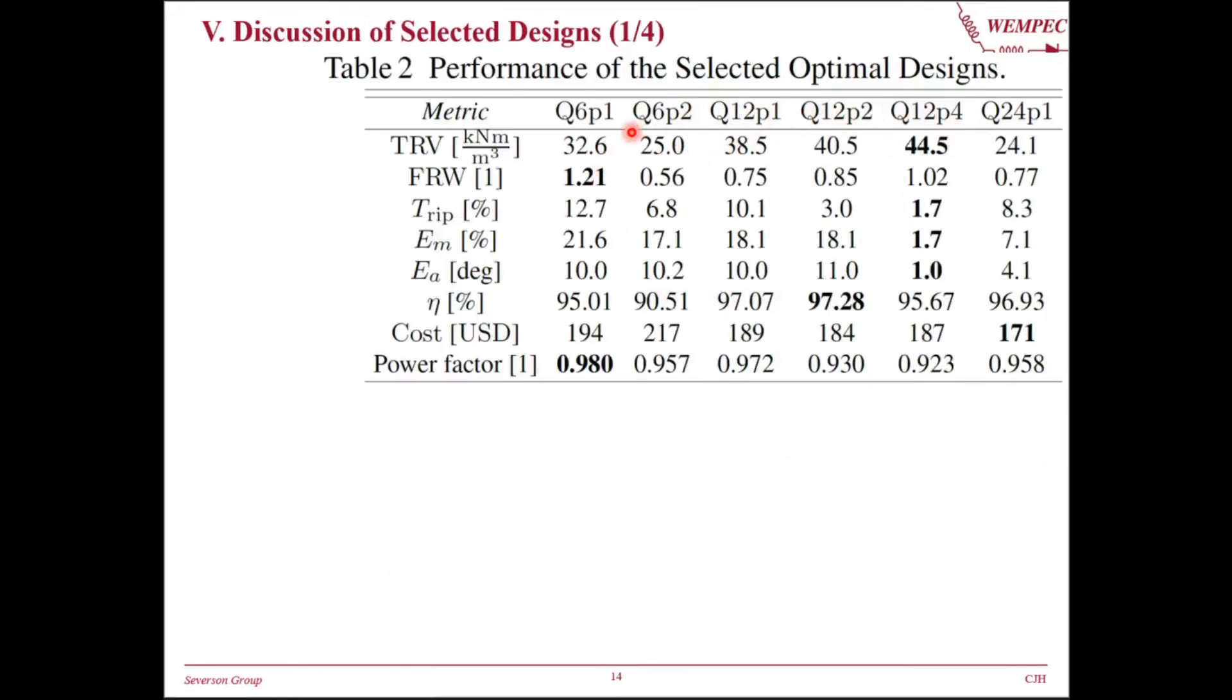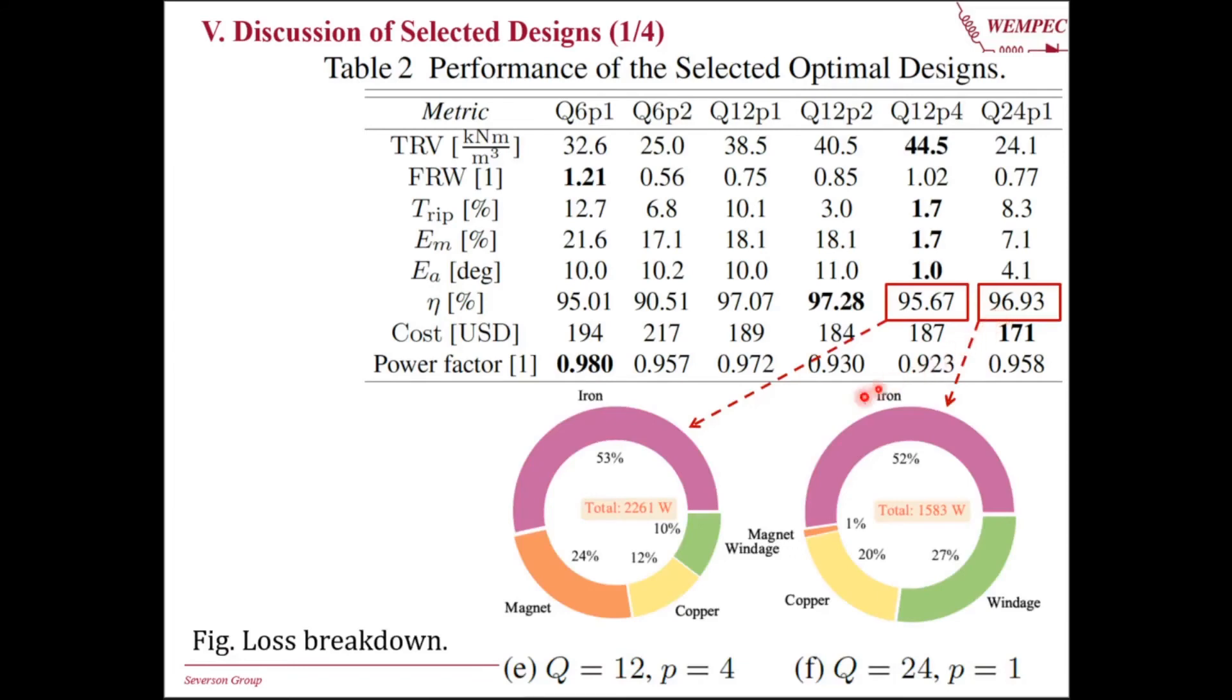This table summarizes the performance metrics of the six selected optimal designs. We are mostly interested in the last two designs because their force error angle values are less than 10 degrees. The Q12P4 design has the lowest torque ripple, force error magnitude, and force error angle. It also has a force per rotor weight value that is larger than one. This means the motor can lift the rotor weight with 5% of slot current. It has the highest torque density, but its cost is higher than Q24P1 design. This is most likely due to the high price of the permanent magnet. Finally, the efficiency of the Q12P4 design is lower than Q24P1 design, and the loss breakdown plot shows the iron loss and magnet loss of the Q12P4 design account for 77% of the total loss, while for the Q24P1 design, the magnet loss is negligible.